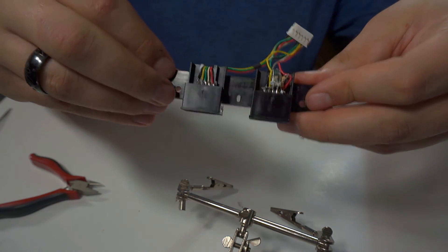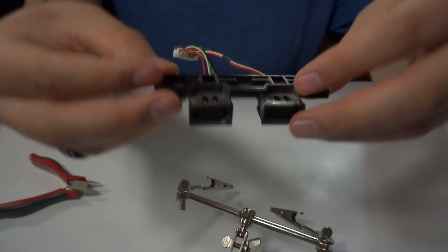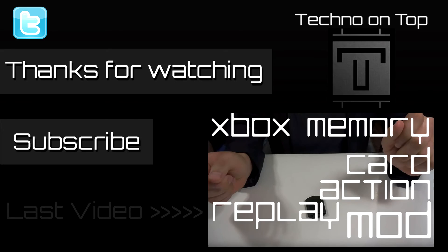Now you just need to do that three more times on each controller port and you have some nicely lit controller ports. I really hope this tutorial helped you guys. Please rate, comment, and subscribe. You can also follow me on Twitter for updates on my channel. All right, peace.